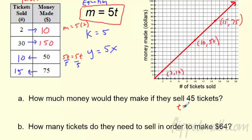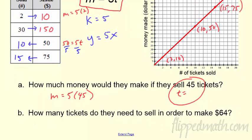So again, this is t. t equals 45. So plug that bad boy in there. What's the money if I do 45 tickets? Something like this. And then the other one is, how many tickets do they need to sell to make $64? So now, this is my money. So this is m.